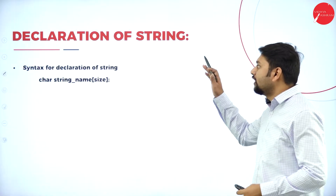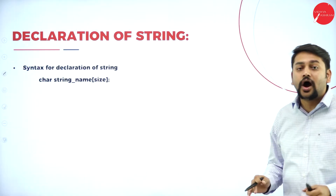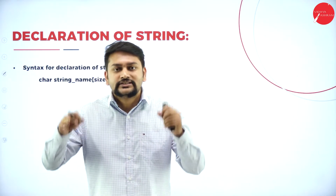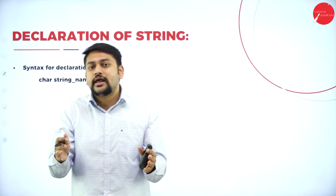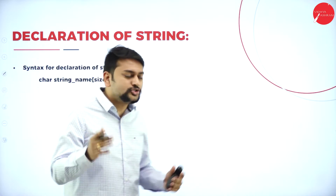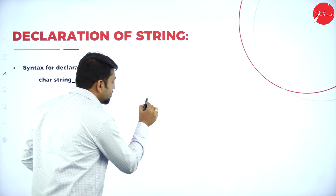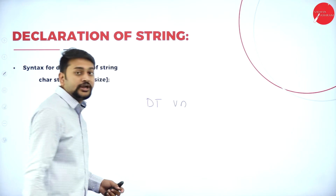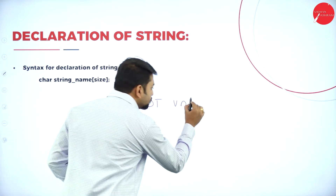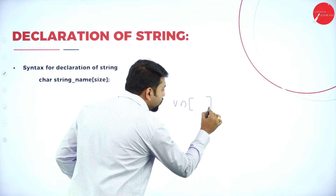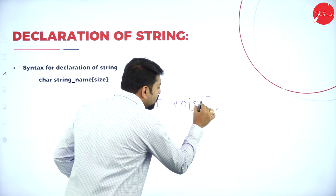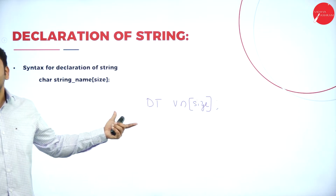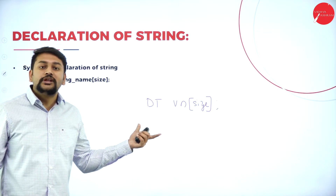Now let's understand how to declare a string. It's very simple — it's similar to declaring an array. How do we declare an array? We use the data type, the variable name, and square brackets. Inside the square brackets we write the size. This is how we declare an array.